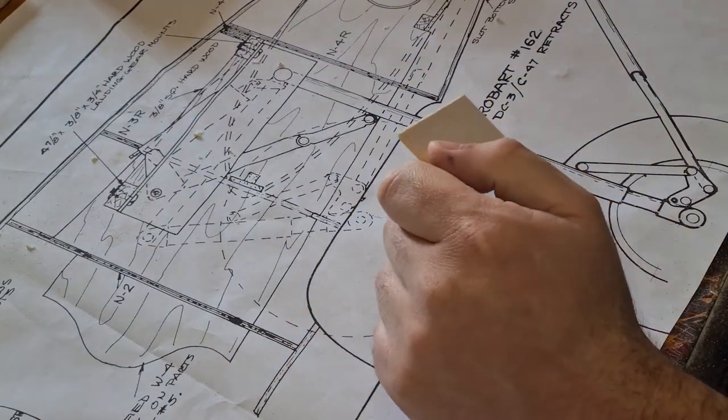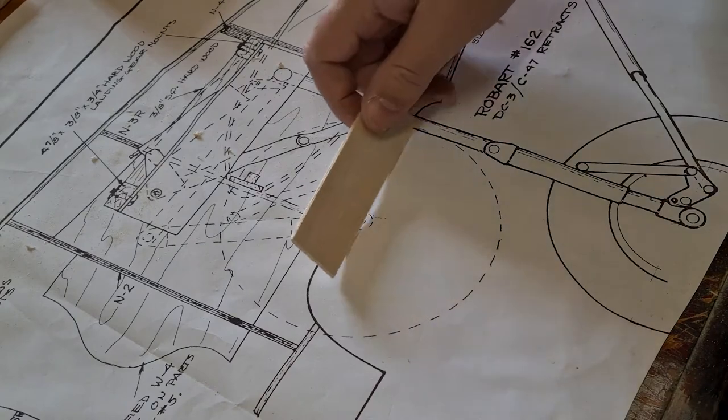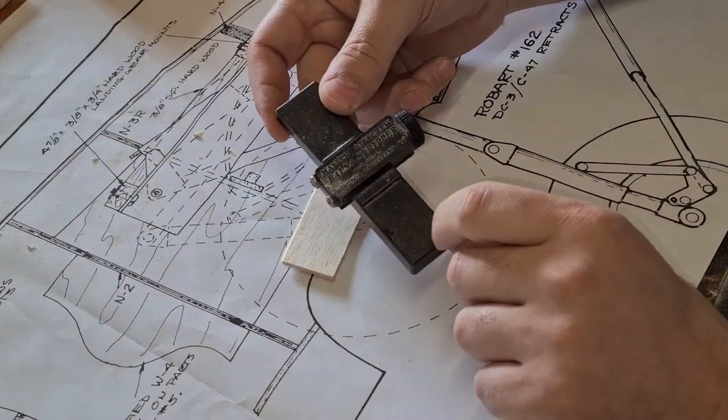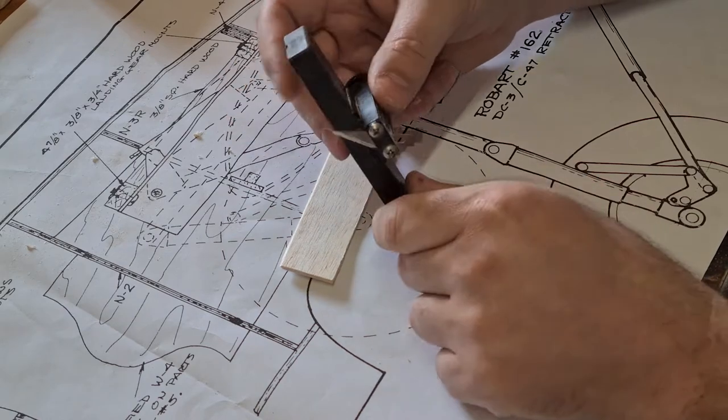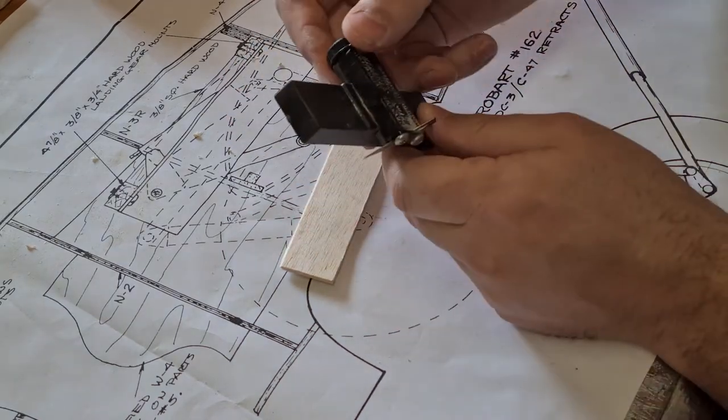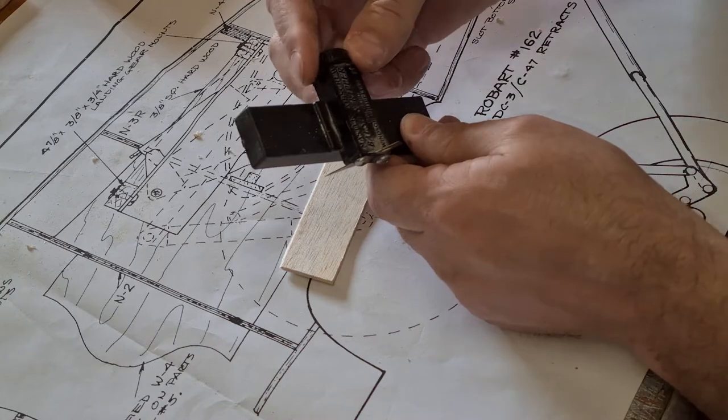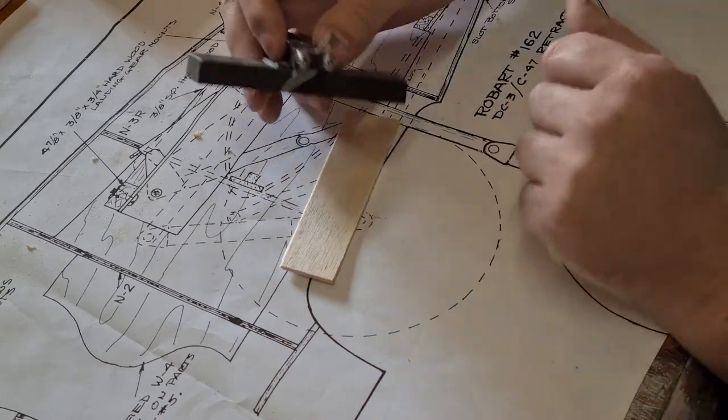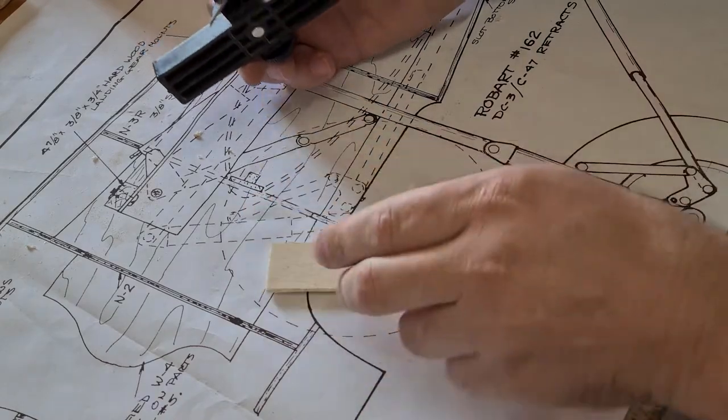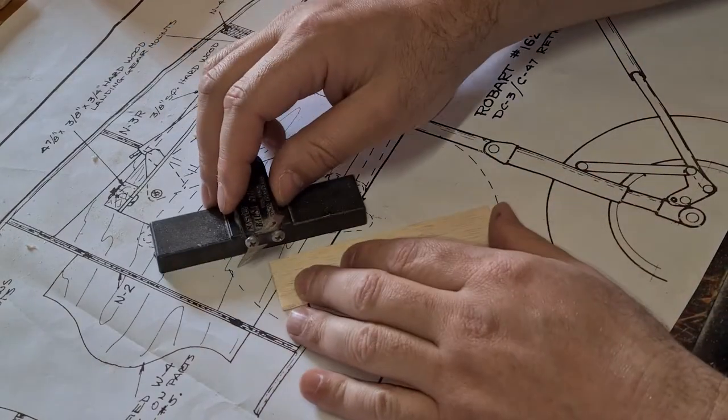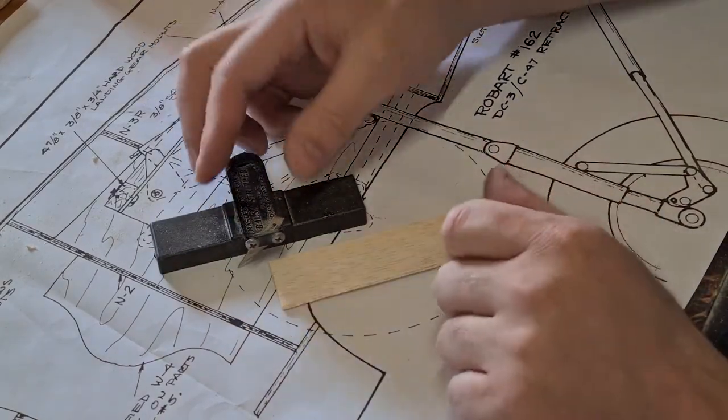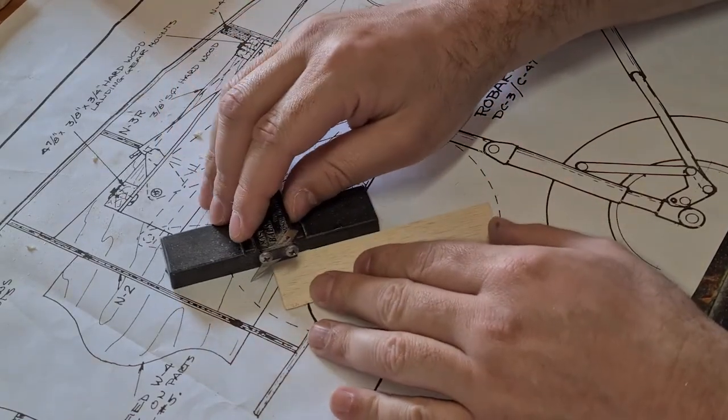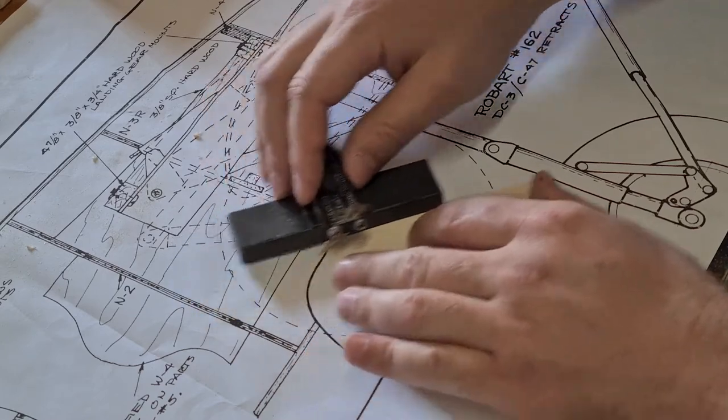Probably the next most favorite tool I have is the balsa stripper. So what this does is by setting this distance here, you can basically cut any width sheet or stock you need. So just say you were planking or something—we needed, this is an arbitrary amount, we needed some strips.